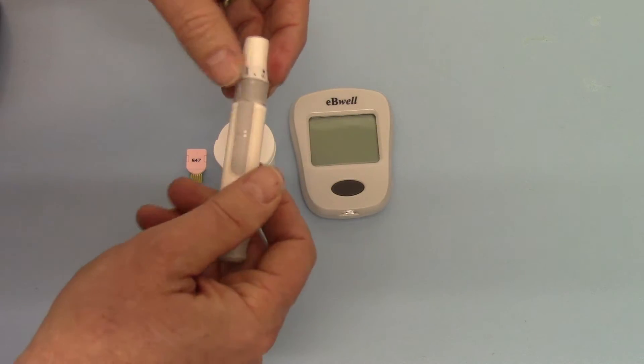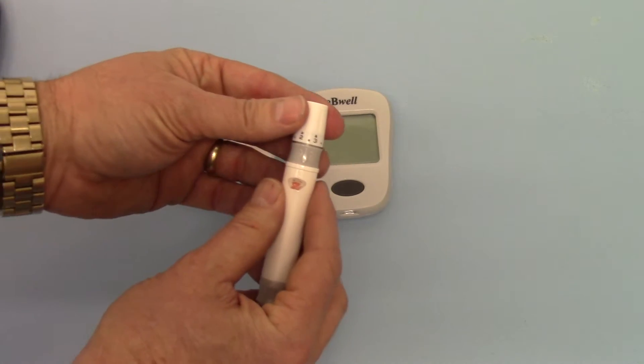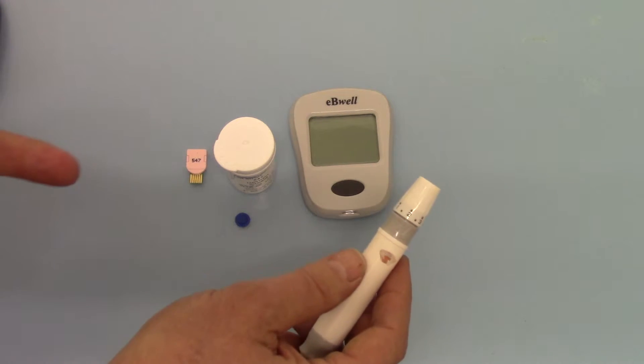We can then put the cover back on. Now I've adjusted this to a lancing depth of 2.3 for demonstration purposes which should hopefully give us a good drop of blood.